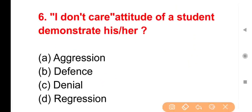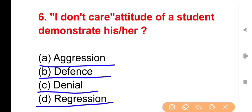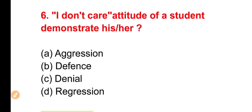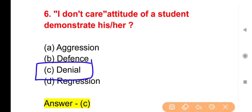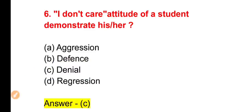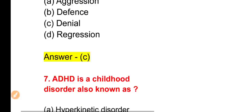Question 6: An 'I don't care' attitude of a student demonstrates which defense mechanism? Options: Aggression, Defense, Denial, Regression — all four are types of defense mechanisms. The right answer is Option C — Denial. The student is trying to deny the situation.